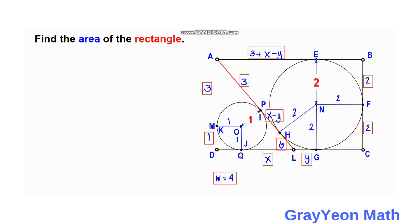Next, we focus on DQ. Since DQ and DM are both exterior tangent segments from point D to the smaller circle — DM is tangent at K and DQ is tangent at Q — DQ equals one. Similarly, GC equals FC because both are exterior tangent segments from point C to the larger circle, giving a length of two. And EB equals BF because both are exterior tangent segments from point B, also giving a length of two.